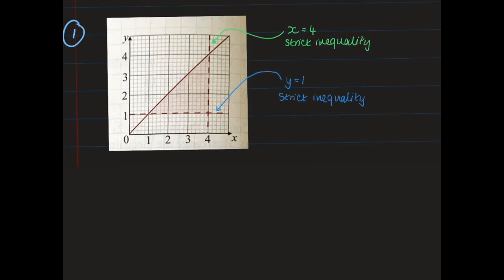Finally, let's look at the diagonal line. It's of the form y equals mx plus c since it's a straight line that's neither horizontal nor vertical. To find the gradient using rise over run, I draw a triangle — the rise is 1 and the run is 1, so the gradient is 1. The y-intercept goes through the origin, so c equals 0. Therefore this is the line y equals x.